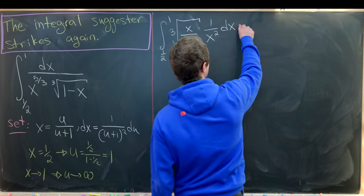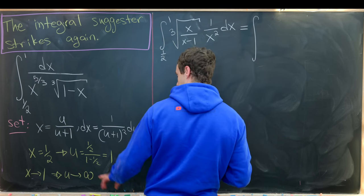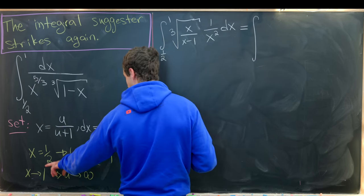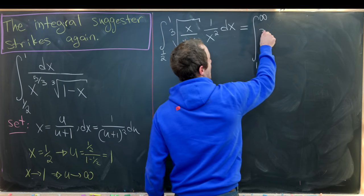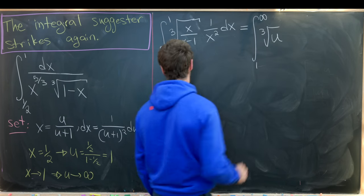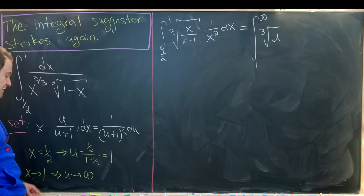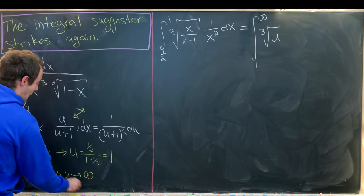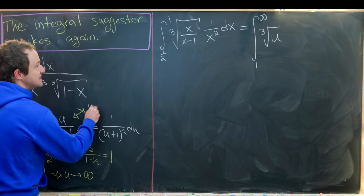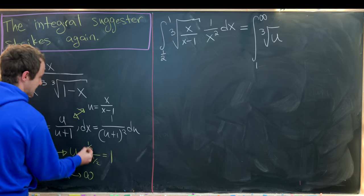So in other words, we want to exchange all of the x's for u's. So like we talked about before, this will now be an integral as u goes from 1 up to infinity, and then we'll have the cube root of u given that x is equal to u over u plus 1, which was the same thing, if you remember, as u is equal to x over x minus 1.